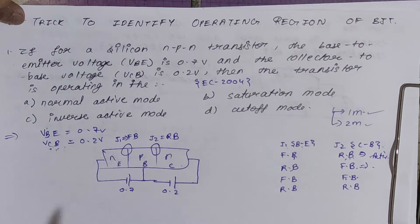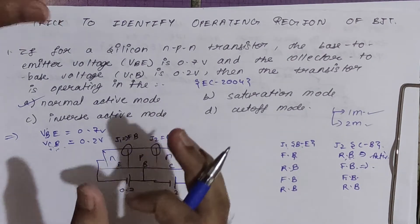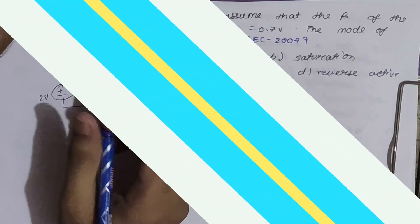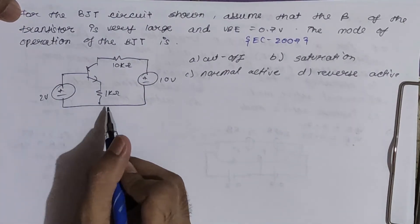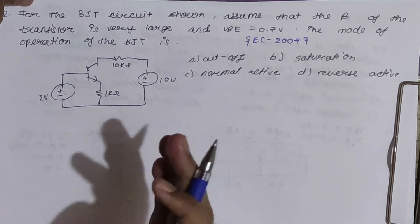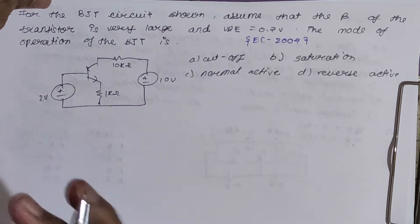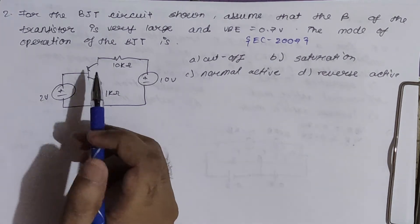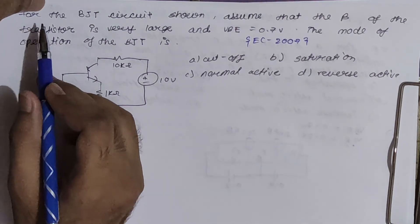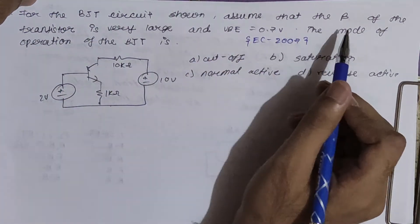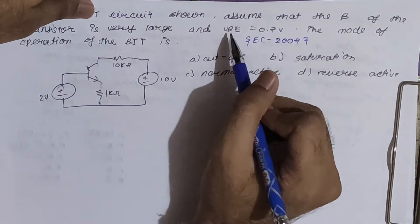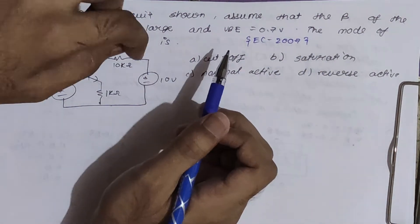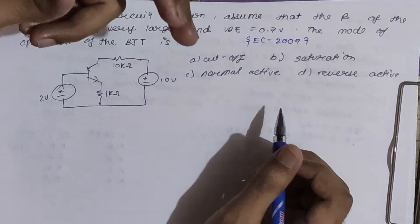The correct answer is the normal active region option. Now let's move to the two-mark question from GATE 2007. A BJT circuit is given; assume the beta (β) of the transistor is very large and VBE = 0.7V. We need to determine the mode of operation of the BJT.